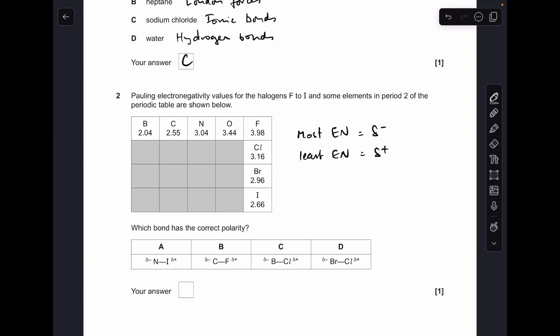Number two: the most electronegative atom is going to be delta negative, least electronegative is going to be delta plus, and the only one that's the right way around is A.